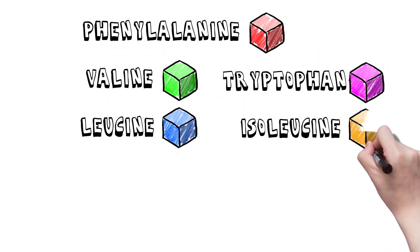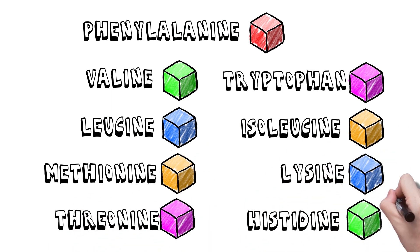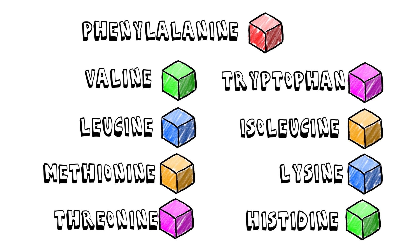there are 9 essential amino acids that your body cannot produce and must instead come from the foods that you eat. And the good news is that these essential amino acids can also be found in plant foods.